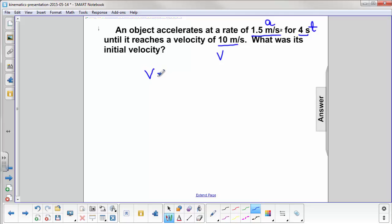We start with kinematics equation number 1. We're trying to solve for the initial velocity, which is v₀, so we need to isolate that variable. v₀ is equal to v minus at.